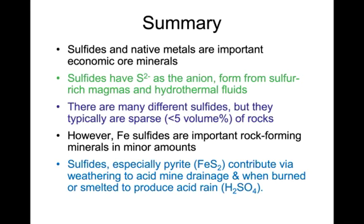In summary, sulfides and native metals are important economic ore minerals. Sulfides have S2- as the anion and form from sulfur-rich magmas and hydrothermal fluids. There are many different types of sulfides, but they typically are sparse — less than 5 volume percent of rocks. However, iron sulfides are important rock-forming minerals in minor amounts. Sulfides, especially pyrite, contribute via weathering to acid mine drainage and, when burned or smelted, produce acid rain.